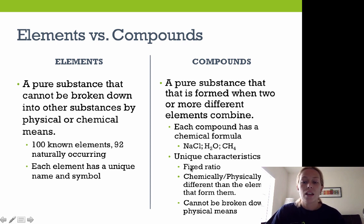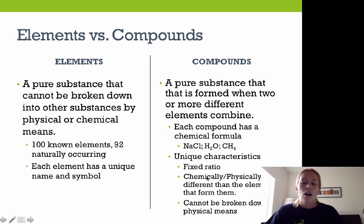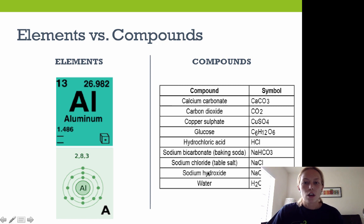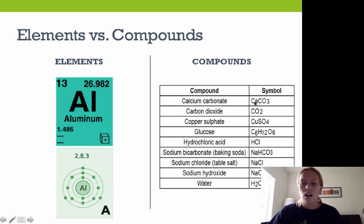Unique characteristics of compounds: they have a fixed ratio — one sodium to one chlorine, two hydrogens for every one oxygen, one carbon to four hydrogens. They are both chemically and physically different from the elements that form them. A compound cannot be broken down by physical means — you can't break or smash it — but it can only be broken down chemically. Examples include aluminum as an element shown with its Bohr diagram, and compounds such as calcium carbonate, carbon dioxide, and so forth with their chemical formulas.